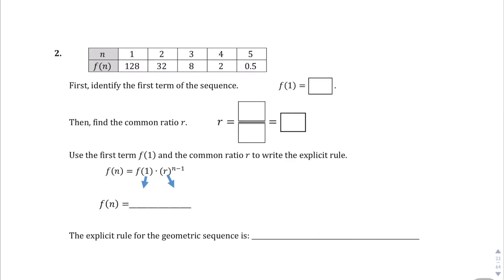Question number 2. Here's the formula for the explicit rule: the function of n equals f of 1 times the rate to the power of n minus 1. The first term, f of 1, is going to be 128. So let's divide the second term — 32 divided by 128. When we do that, 32 divided by 128, you're going to get 0.25, or 1 fourth.